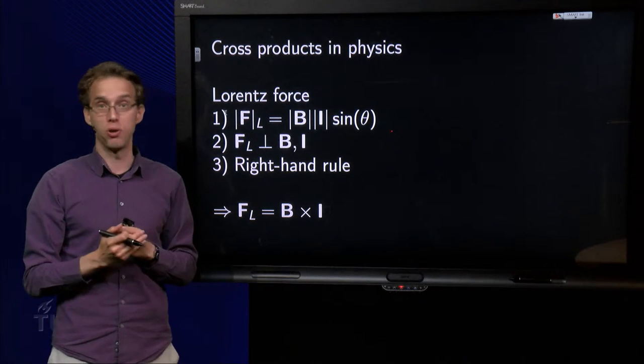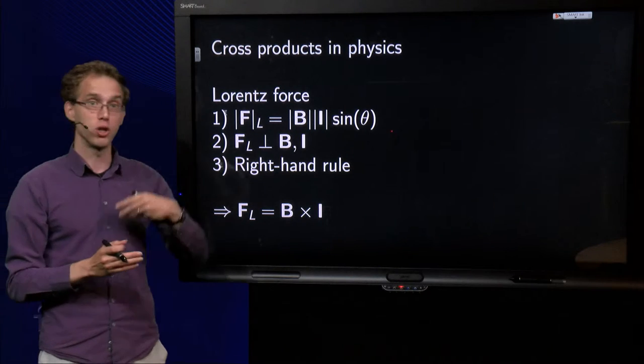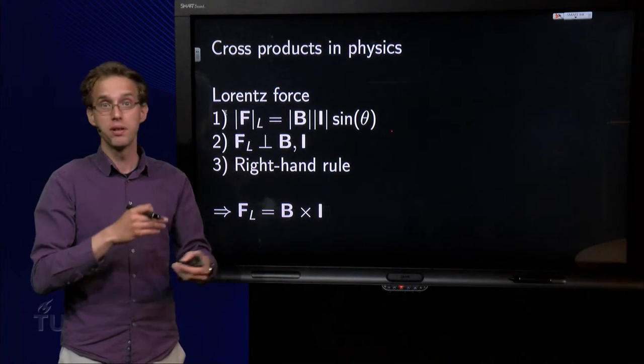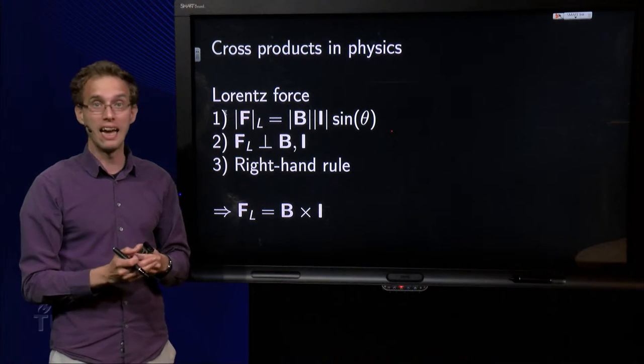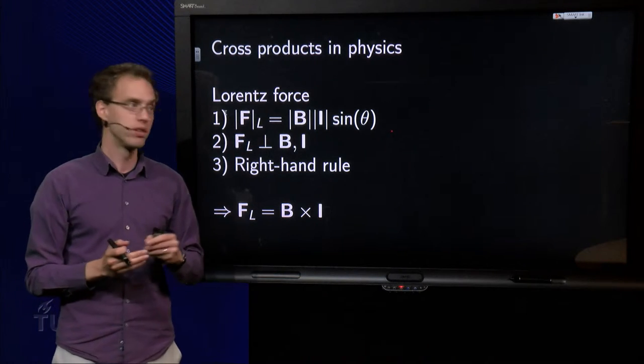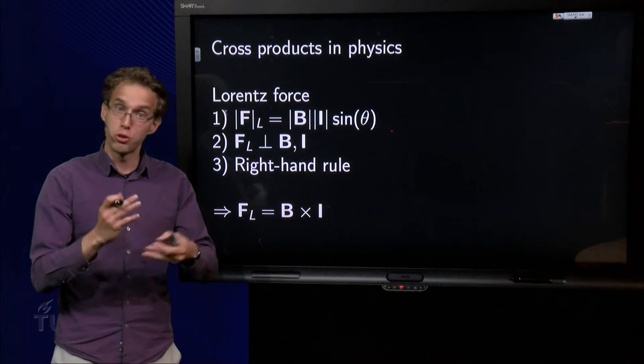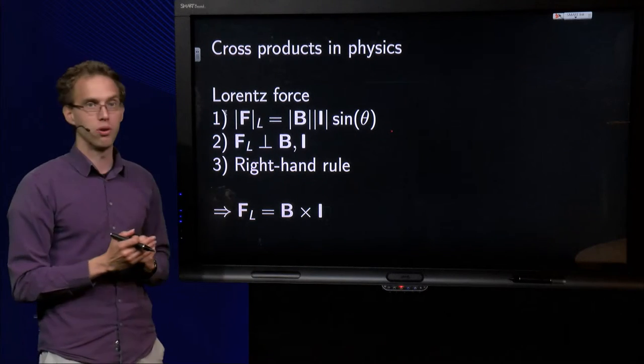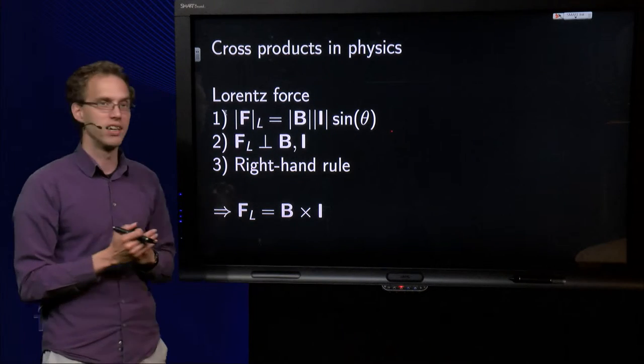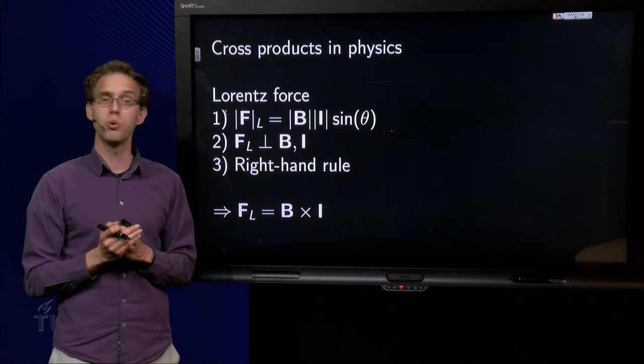And then you also learned in high school that Lorentz force was orthogonal to both B, magnetic field, and I, current density. So that's the second rule you learned. And then in order to determine the direction of the Lorentz force, you learned that you had to use your right hand rule.